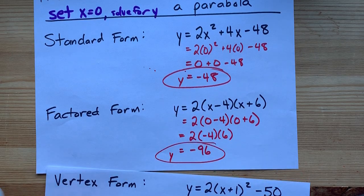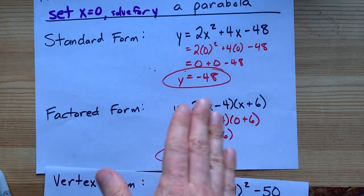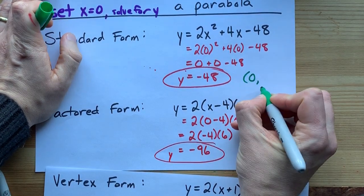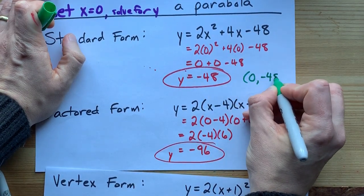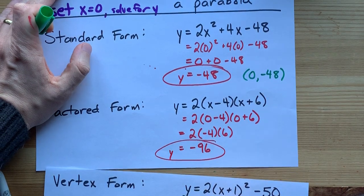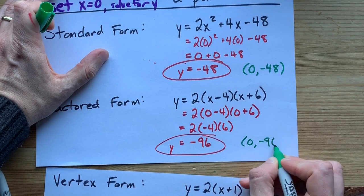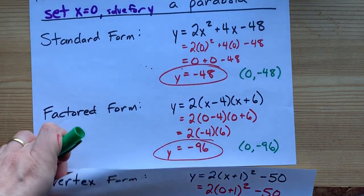Just one extra thing to note. The actual coordinates of the y-intercept are going to be 0 comma whatever number you got here. This one's 0 comma negative 48. The coordinates of the y-intercept are 0 comma negative 96.